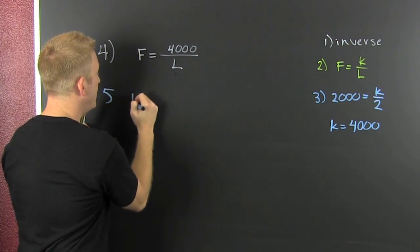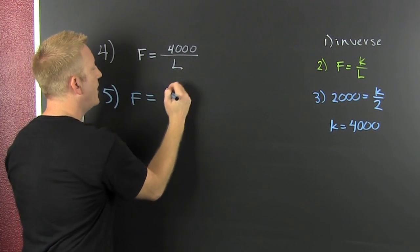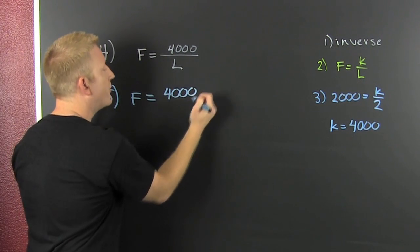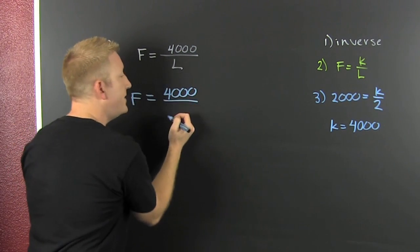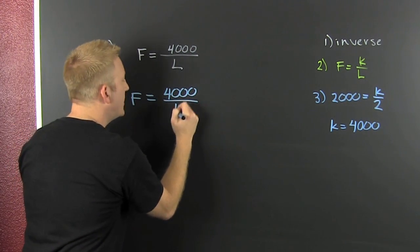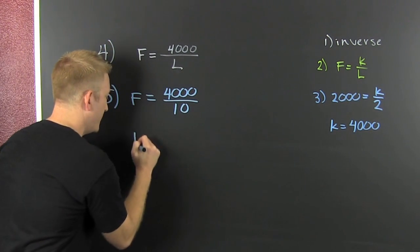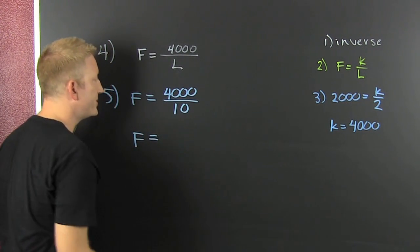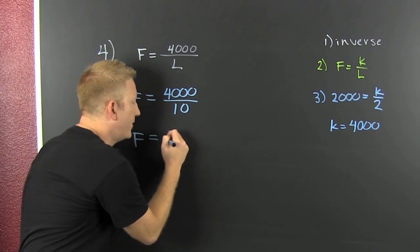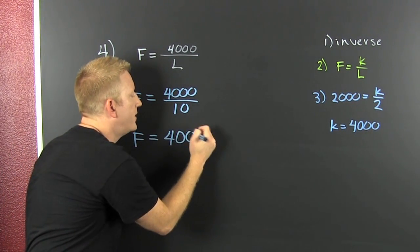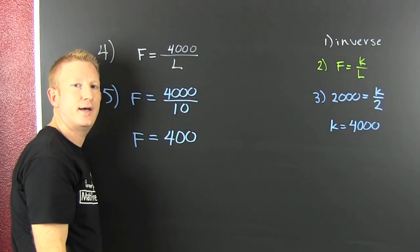So then the force is gonna be 4,000, that was my constant of variation, and then my new length is 10. So finish him. This force is gonna be 400 pounds.